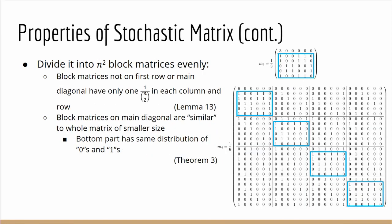Alternatively we can divide the M_n into n squared block matrices, that is n divisions on both sides. We notice that the block matrices not on the first row and not on the main diagonal have only 1 over n choose 2 in each column and each row, and the block matrices on the main diagonal are similar to the whole of the matrix or the smaller size. That is the bottom part has the same distributions of zeros and ones. So for example we have M_4 here and the block matrix has the distributions of zeros and ones here like this. And if we look at M_3 the bottom part has the same distribution of zeros and ones as shown as well.